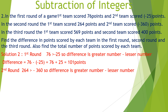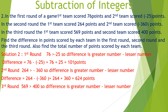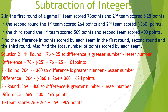In the second round, the first team scored 264 points and the second team scored minus 360 points. Since 264 is greater than minus 360, the difference equals 264 minus minus 360, which equals 264 plus 360, equals 624 points. In the third round, the first team scored 569 points and the second team scored 400 points. Since 569 is greater than 400, the difference equals 569 minus 400, which equals 169 points.